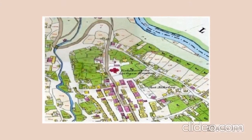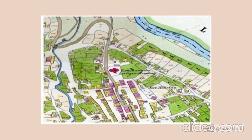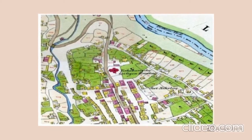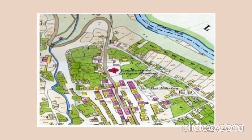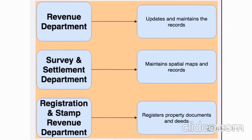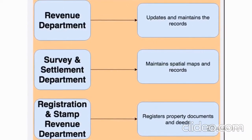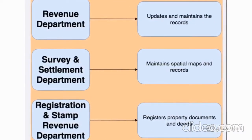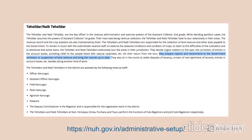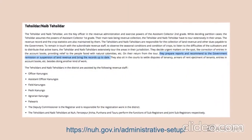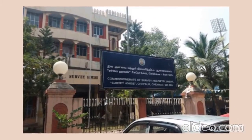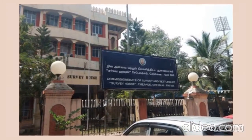Spatial records refer to the cadastral maps that outline the geographic details sketched on the map. This map must be updated every time a new change is made on the record of rights. However, often this does not happen as both documents are maintained by different departments. The staff under the Tehsildar at the revenue department maintains the textual records, while the spatial ones are maintained by the survey and settlement department.